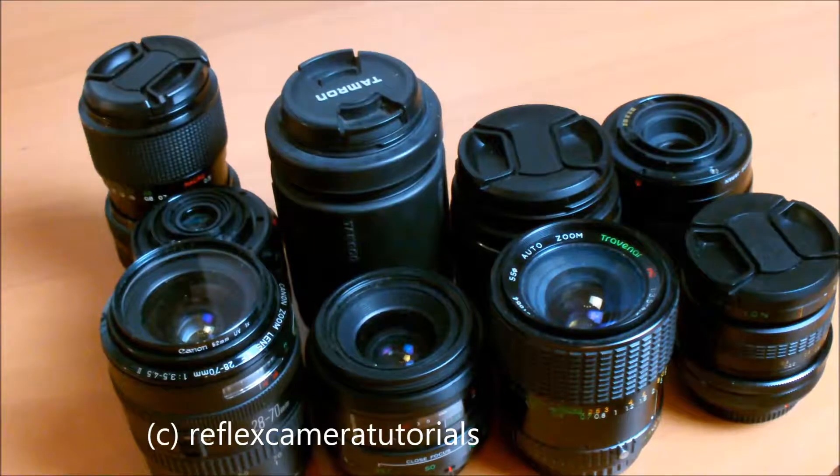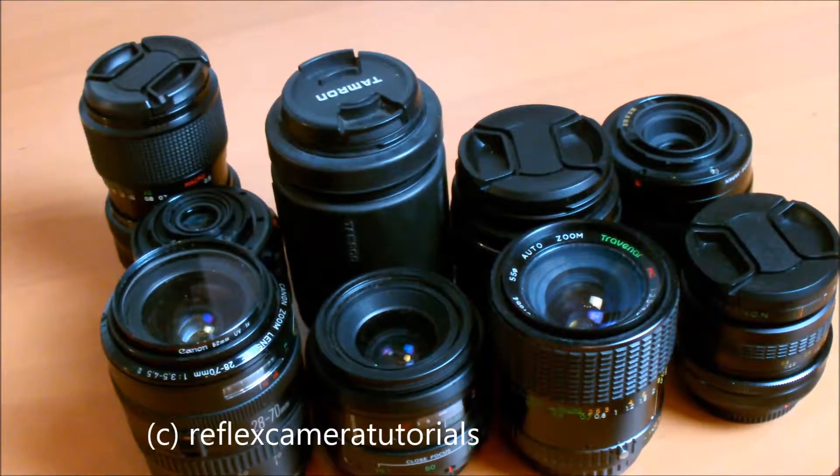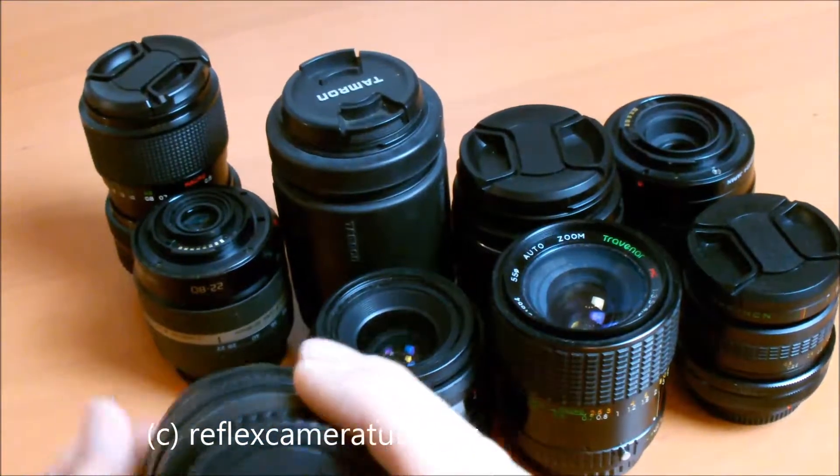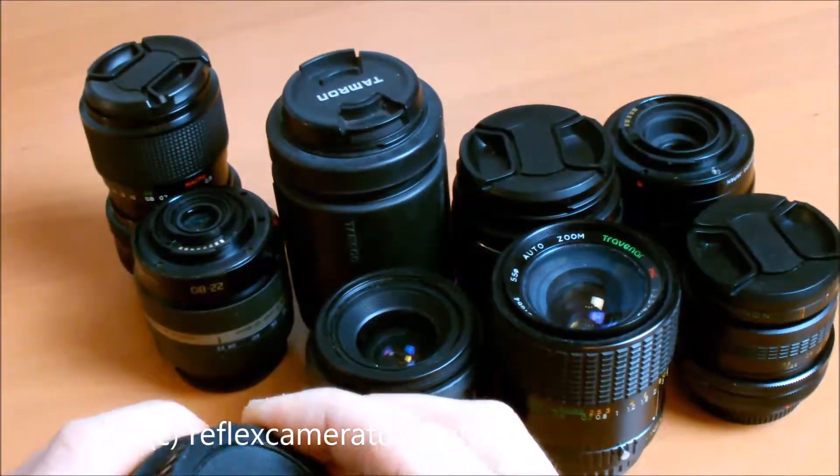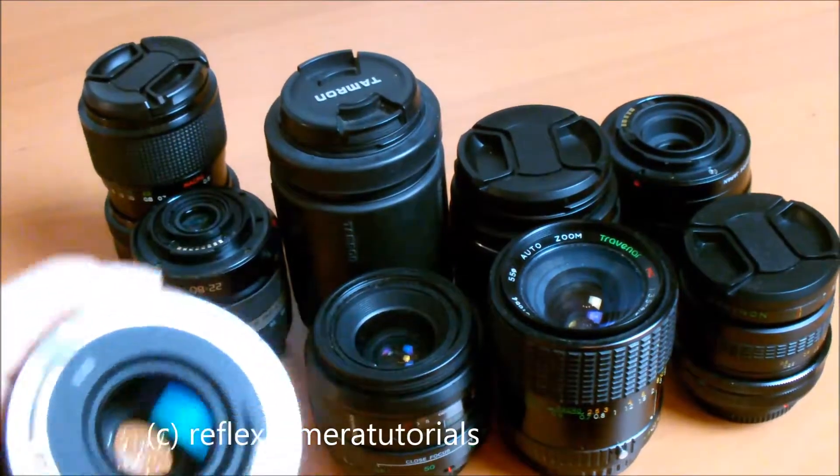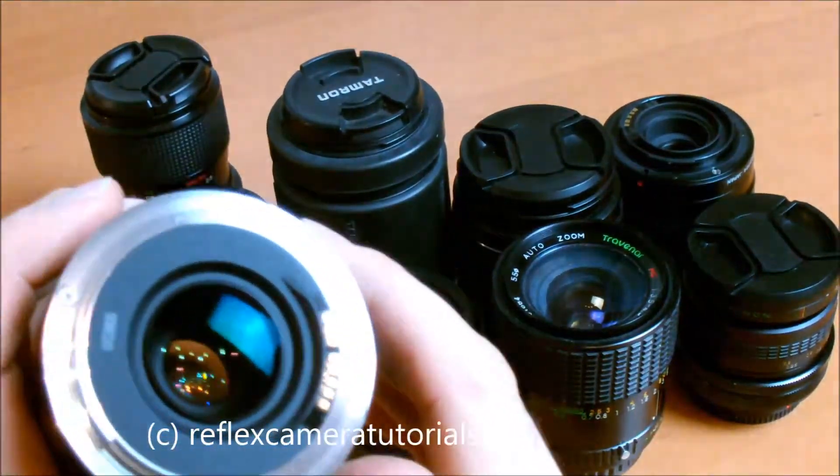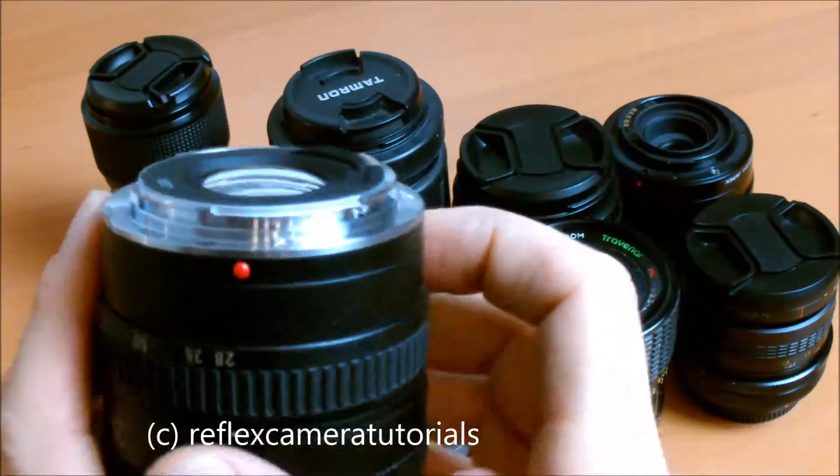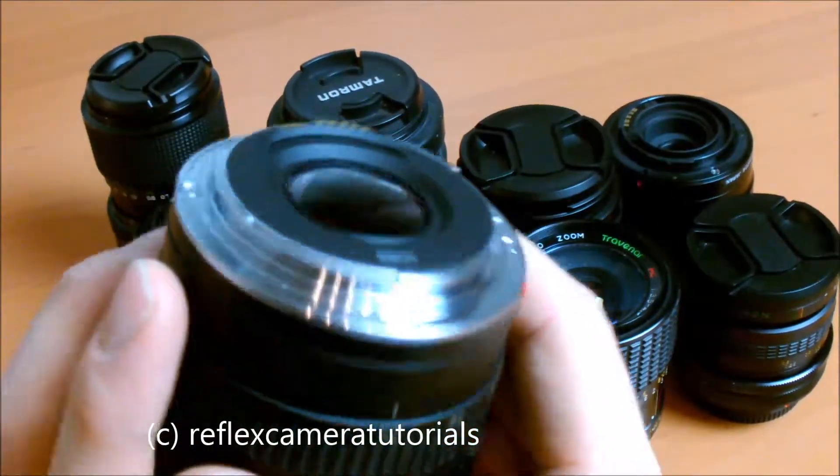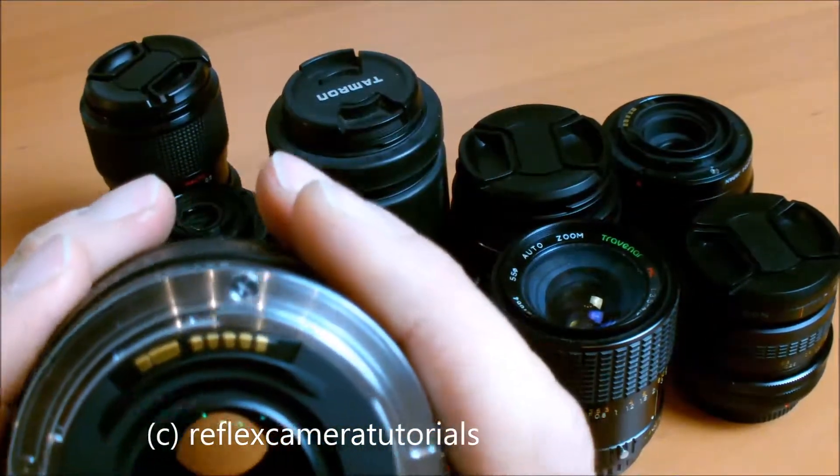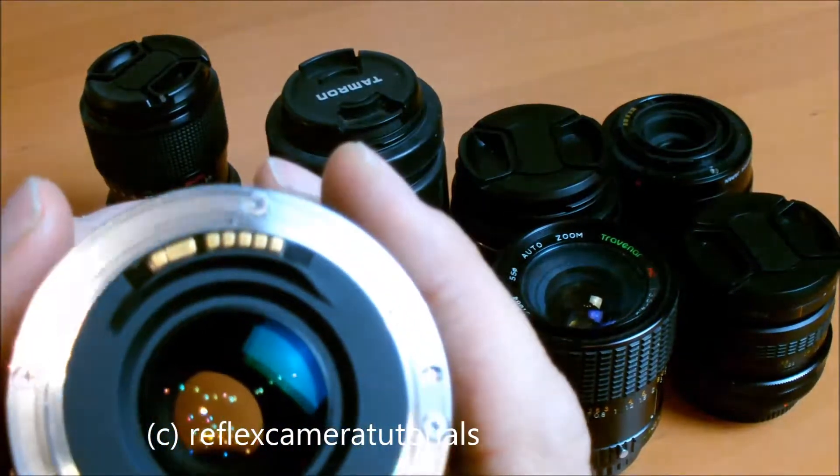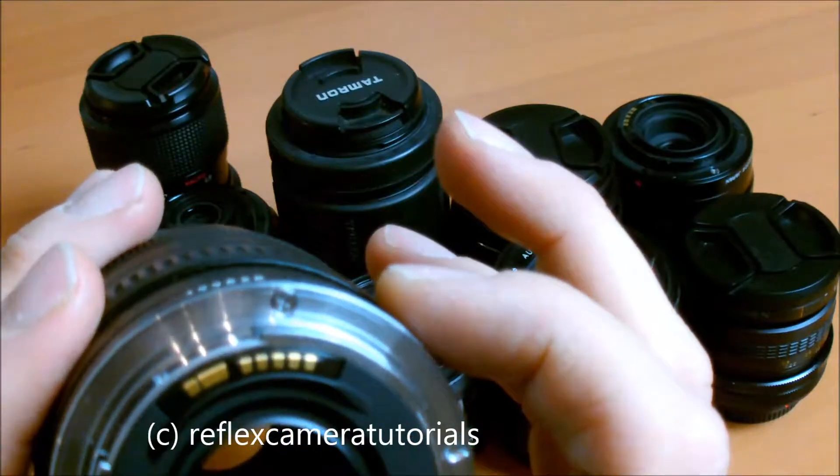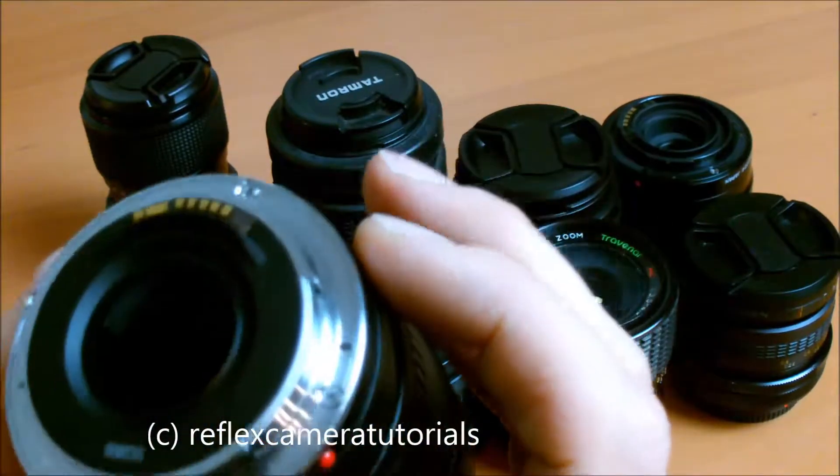We'll begin with my preferred system, the Canon EOS system. We have two different types from the Canon EOS system. The so-called EF lens mounting, as you can see, is made from metal and we have those contacts here that give information from the camera to the lens and the other way around.